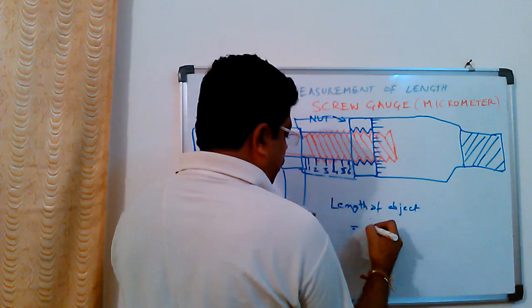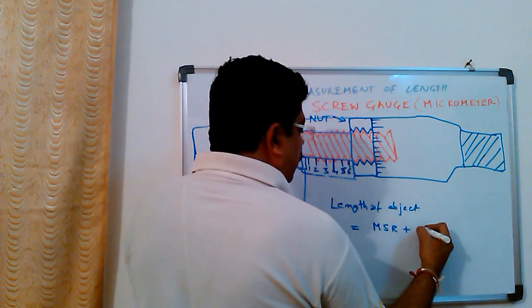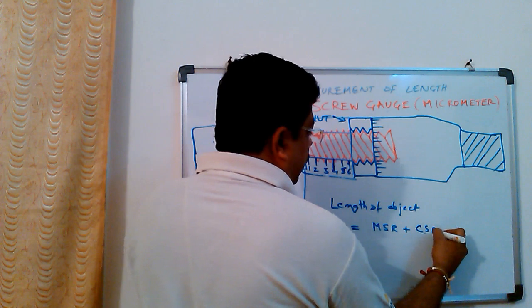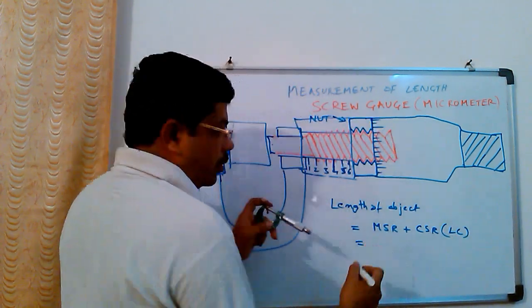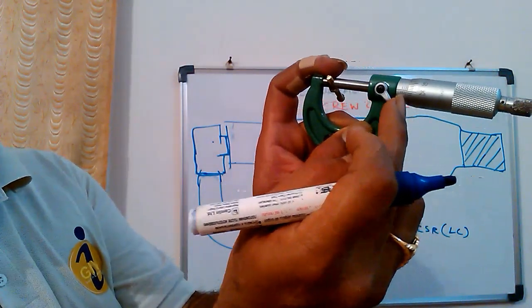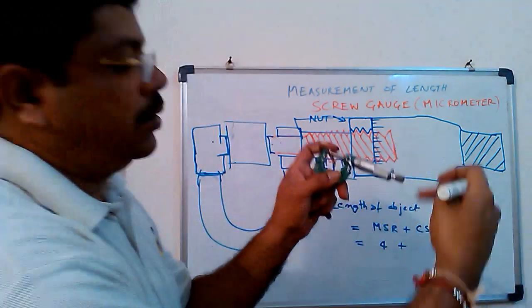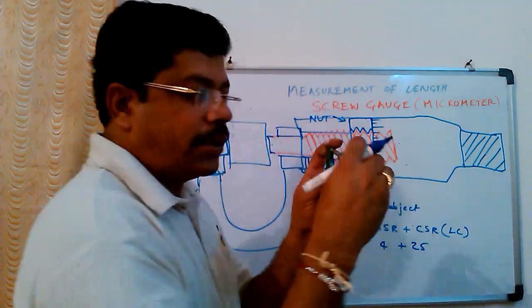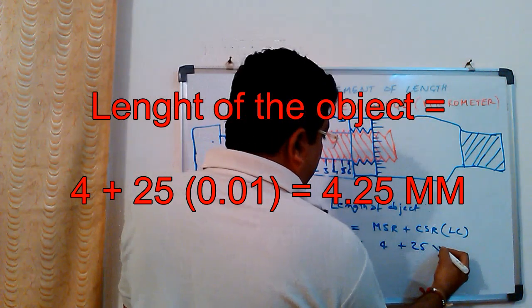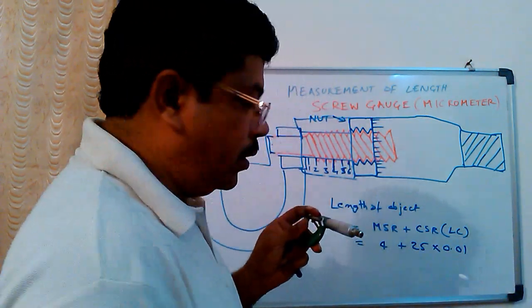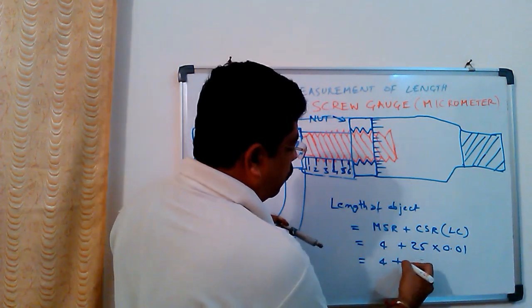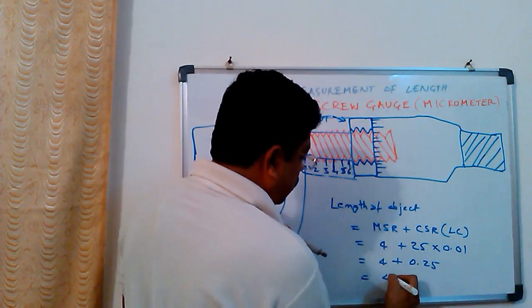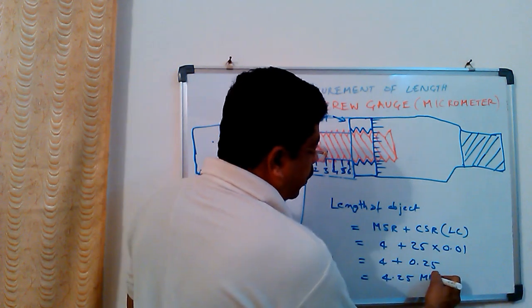Is equal to main scale reading plus circular scale reading times least count. So the main scale reading is around four here, plus this circular scale reading is around 25 here, and the least count written on the back is 0.01. So this works out to 4 plus 25 times 0.01, which equals 0.25, which equals 4.25 mm - the diameter of this particular screw.